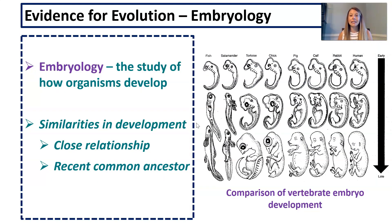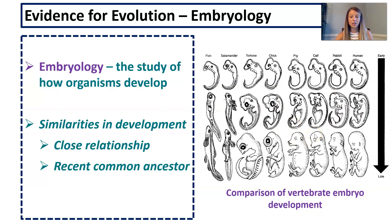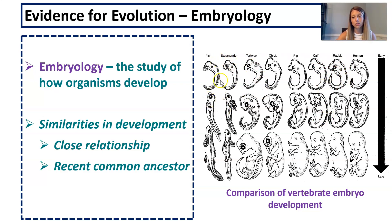Our last piece of evidence is embryological evidence — embryology is the study of how organisms develop. Similarities in development suggest a close relationship and a recent common ancestor. Looking at vertebrate embryo development, very early stages look very similar across species. As development progresses, some differences appear. From this embryological evidence we conclude that humans are more closely related to rabbits and calves than to tortoises, salamanders, and fish — which sort of makes sense.